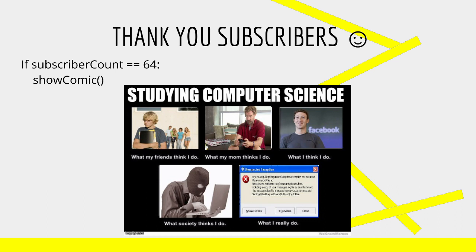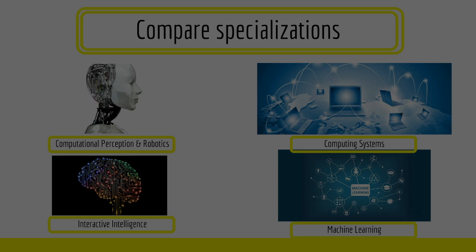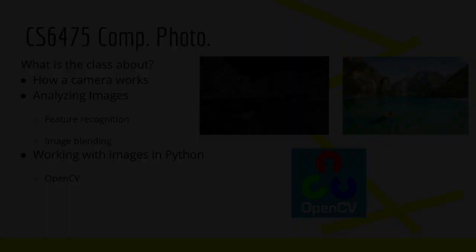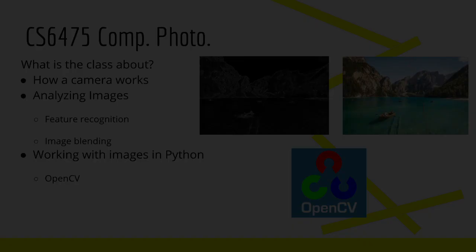This episode's comic is what each person thinks of when you tell them you're a computer scientist. In the last episode, we looked at all the different specializations the OMS CS program offers, namely computational perception and robotics, computing systems, interactive intelligence, and machine learning. If you'd like to see more on this, make sure to check out the previous episode — there was a good comparison at the end. In this episode, we're going to be taking a deeper look at CS6475 Computational Photography.